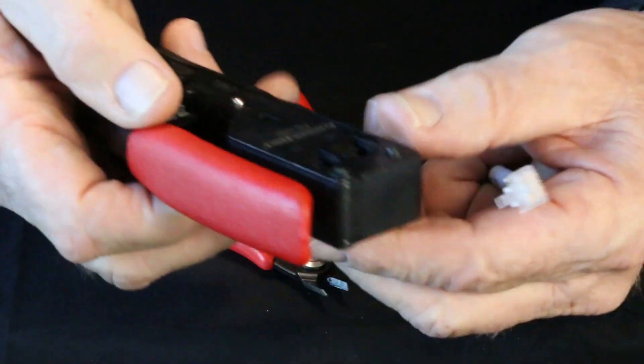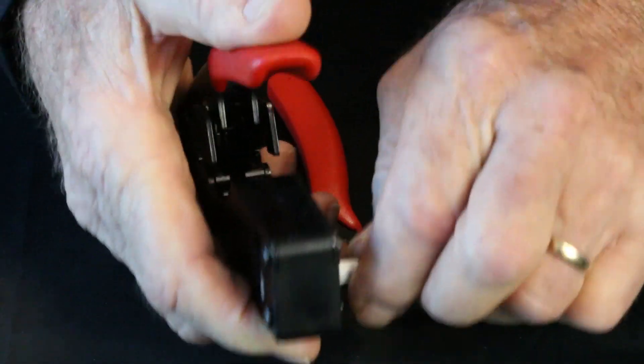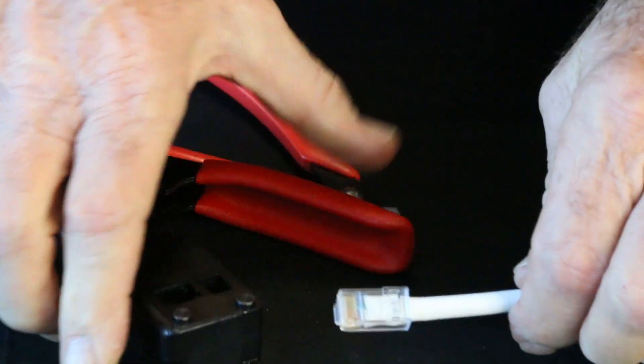So, let's take our Tele-Titan tool here. Put this in. Make sure to hold it tight while you're crimping it. Ready to go. Bring it down. And there you go.